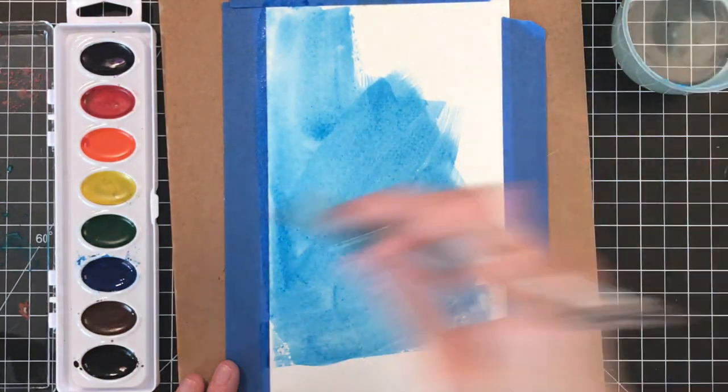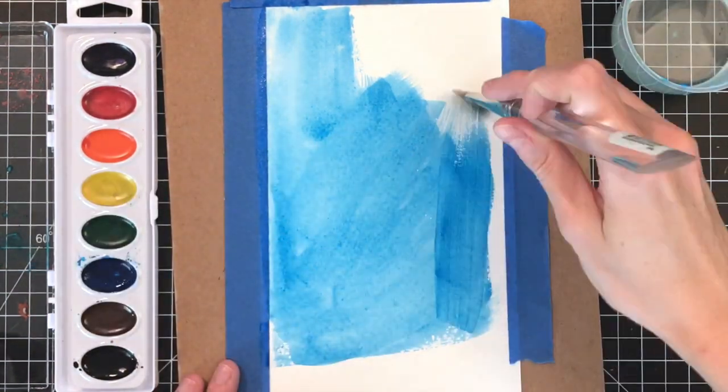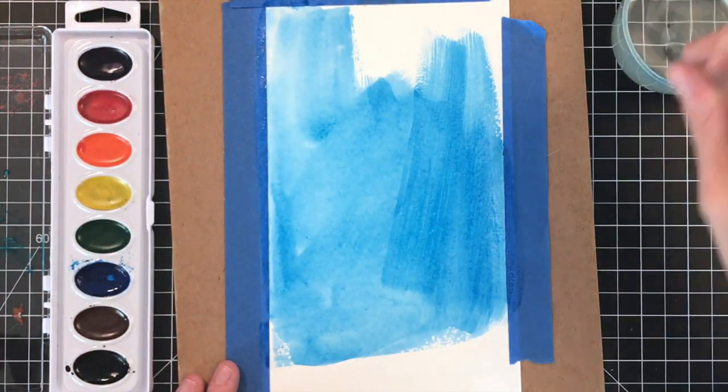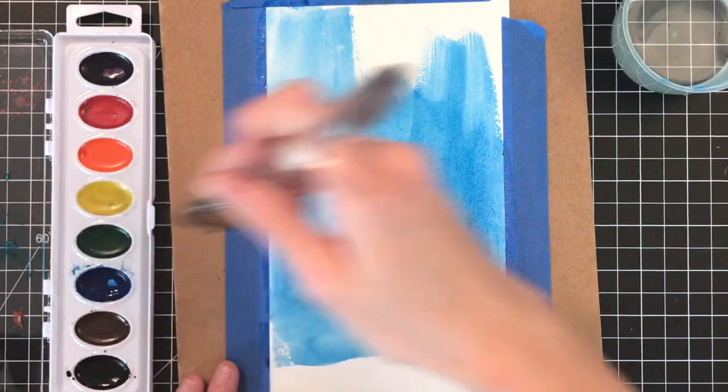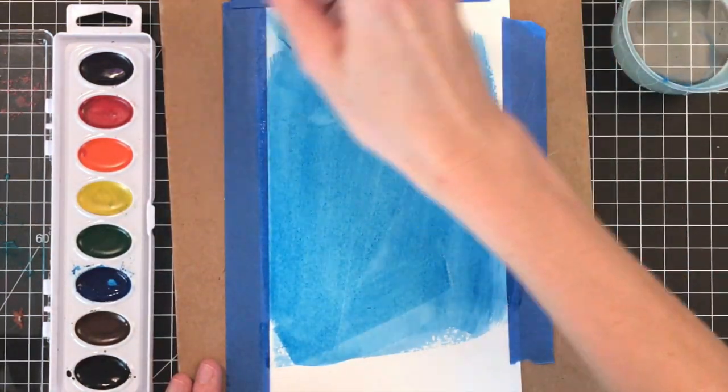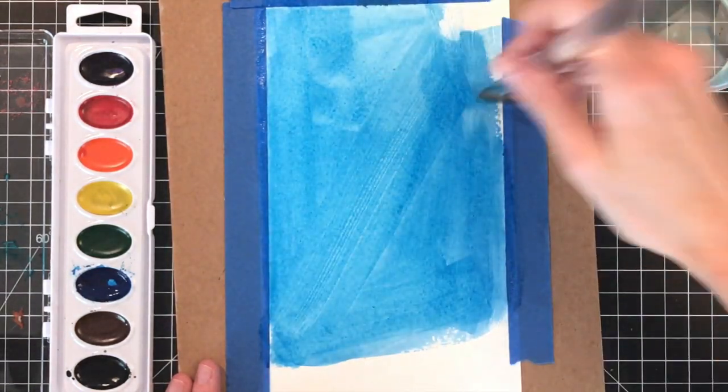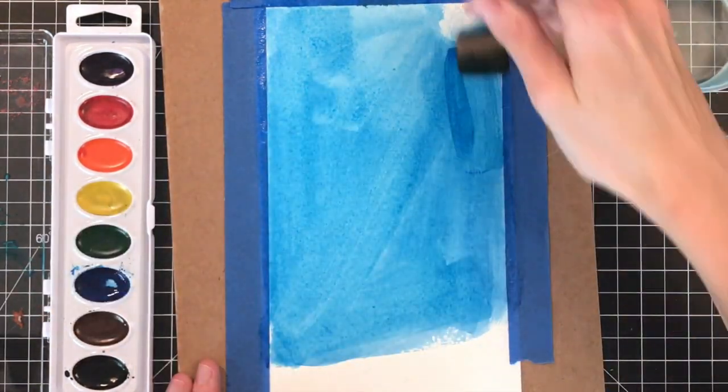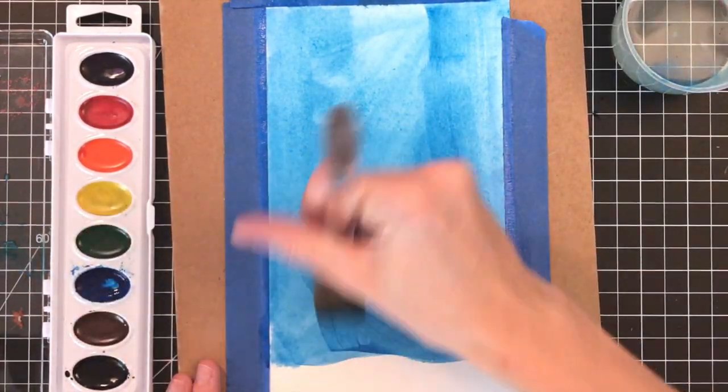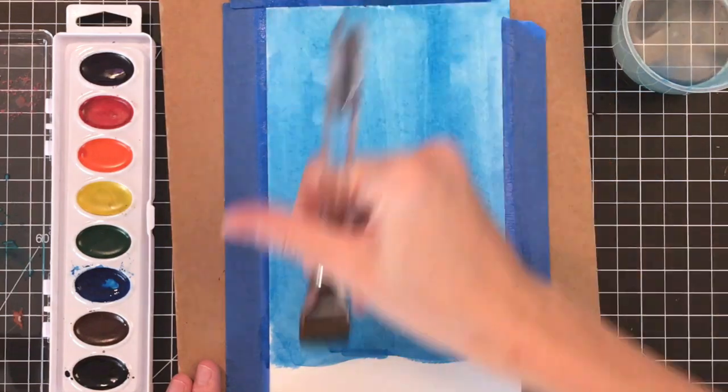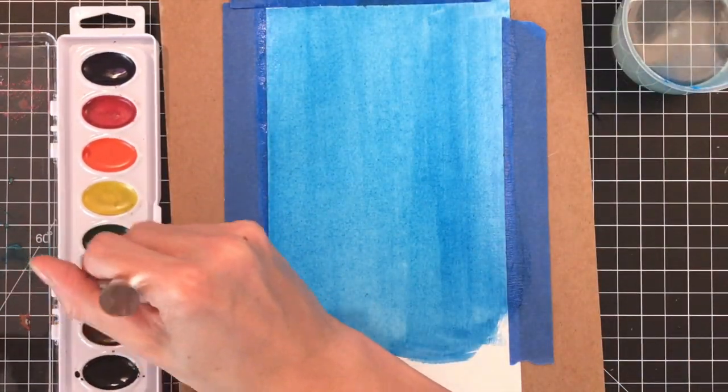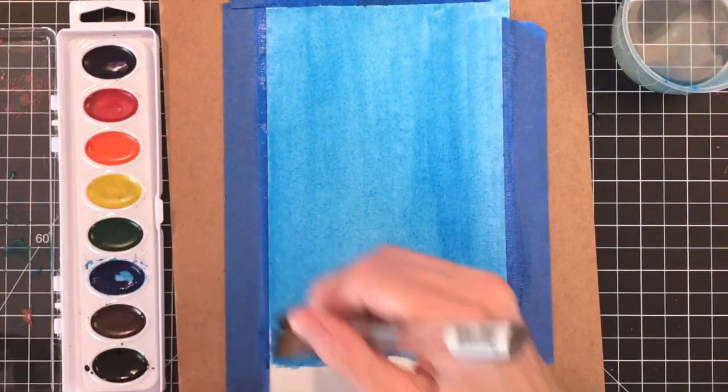I just want to get a lot of color down on my paper because with this technique we're going to be removing color and the only way to see the images is if you've got a lot of color down there initially that's trapped beneath the clear heat embossing. So I've got to build up some layers of paint here and I'm just going to start with my watercolors and then I'll move onto some distress inks. I've got a nice big brush. This is great for when you're doing backgrounds so you can get a lot painted very quickly.